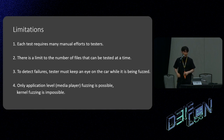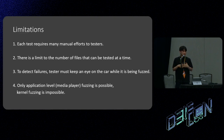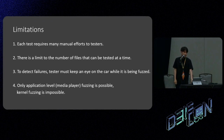Third, to detect failures from fuzzing, testers must keep an eye on the car while it's being fuzzed. Testers use a media file fuzzer that is not connected to the car — it just generates malformed files on the PC. So the fuzzer cannot detect failures caused by fuzzing. Therefore, testers must observe the media player while fuzzing is performed. To find vulnerabilities, testers must test a large number of files, which means sitting and watching the media player for a long time in the car.